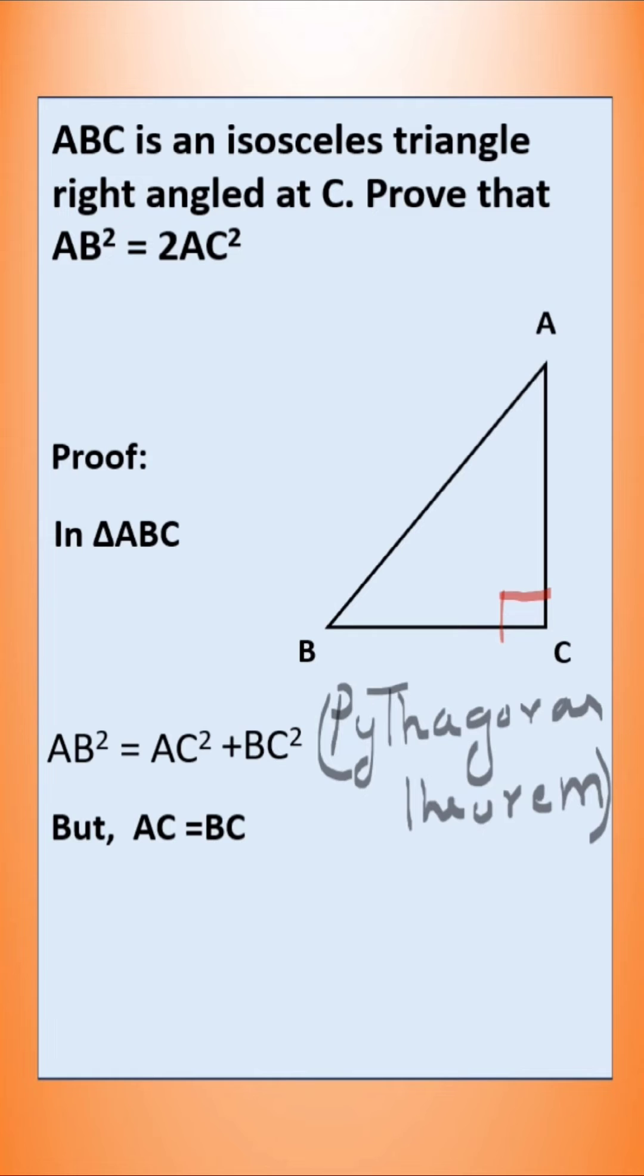But we are given that AC = BC. ABC is an isosceles triangle, meaning two sides are equal. So now let us substitute. Since we need to prove AB² = 2AC², we have to get AC².